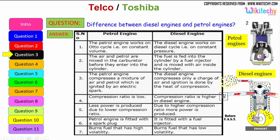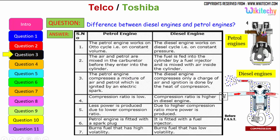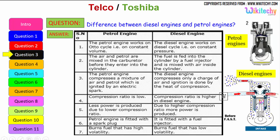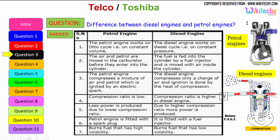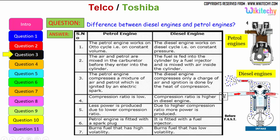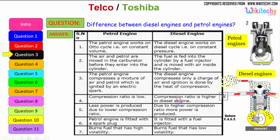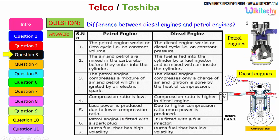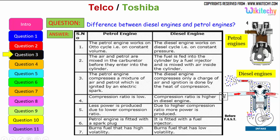The petrol engine compresses a mixture of air and petrol which is ignited by an electrical spark. The diesel engine compresses only a charge of air, and ignition is done by the heat of compression. The compression ratio is low in the petrol engine, whereas the compression ratio is higher in the diesel engine. Less power is produced due to the lower compression ratio; with a higher compression ratio, more power is produced.